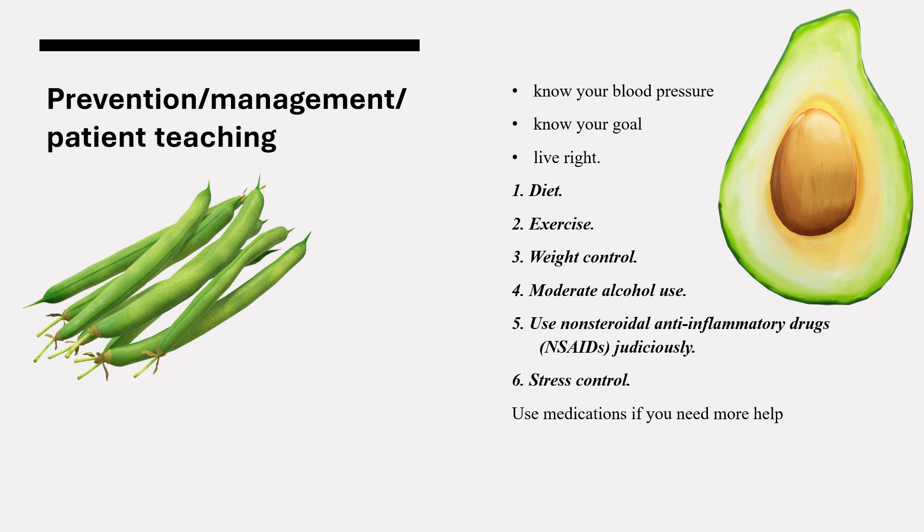Long-term use of NSAIDs such as ibuprofen and naproxen can raise blood pressure, particularly in older people. Lastly, you want to identify your stressors — stress control is easier said than done in today's hectic world, but winding down can help you keep your pressure down. And always remember, you can use medications if you need more help.